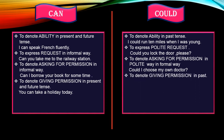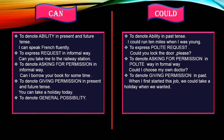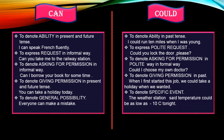Could is also used for giving permission in the past. For example: 'When I first started this job, we could take a holiday when we wanted.' Can is used to denote general possibility — something that can happen anywhere — like: 'Everyone can make a mistake.' Could is used for a specific event or possibility, like: 'The weather station said temperature could be as low as 10 degrees Celsius.'